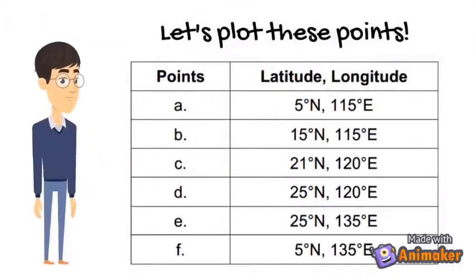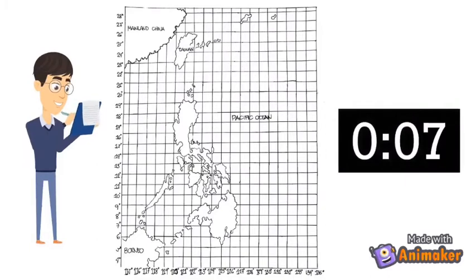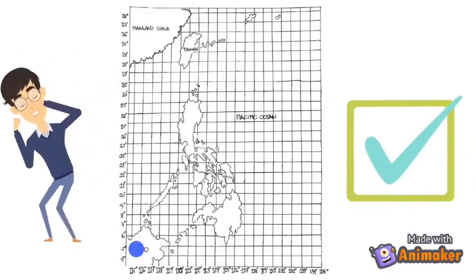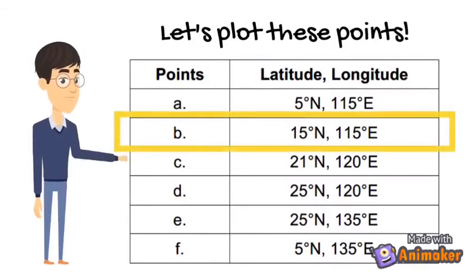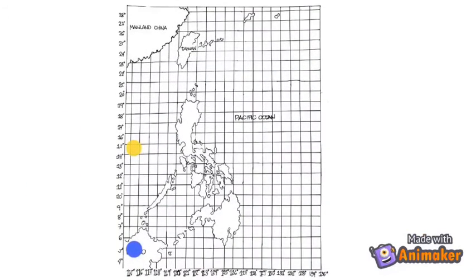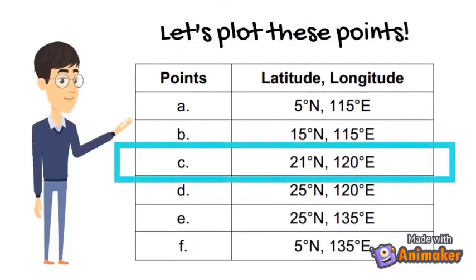Now let's plot these points. Starting with point A: 5 degrees north and 115 degrees east. Next, point D: 15 degrees north, 115 degrees east. Proceed to the next one. Next is point C: 21 degrees north and 120 degrees east.